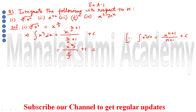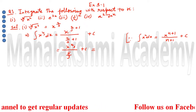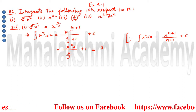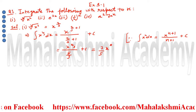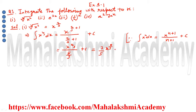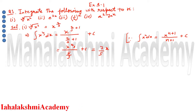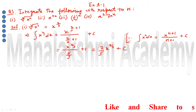When we simplify the fraction, dividing by 5 upon 3 means multiplying by the reciprocal, which is 3 upon 5. So the answer is 3 upon 5 times x to the power 5 upon 3, plus c, where c is the integration constant. That completes the first part.